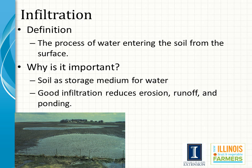Soil quality is also defined by looking at the infiltration rate of a soil. Infiltration is simply the process by which water actually enters into the soil from the surface, either during a rainstorm or irrigation. It's important because we want water to get into the soil so the crop can take it up in order to grow. But oftentimes during a heavy rainstorm, water will sit on the surface. If it's not infiltrating into the soil, there's a strong potential for it to run off, resulting in ponding, sedimentation, and other problems.